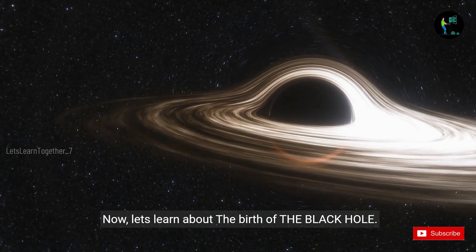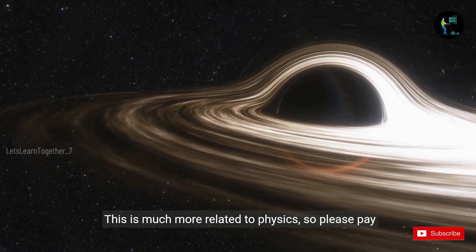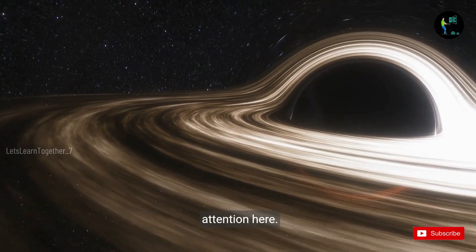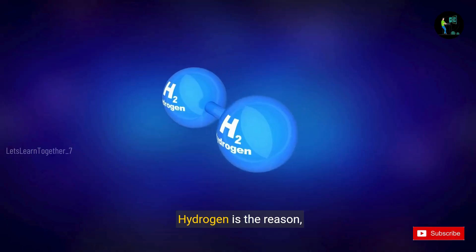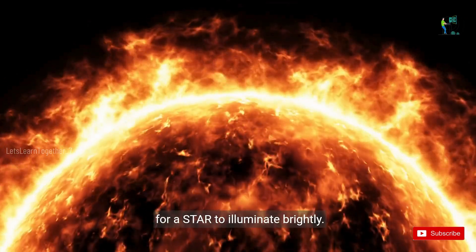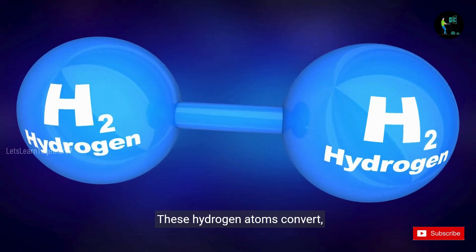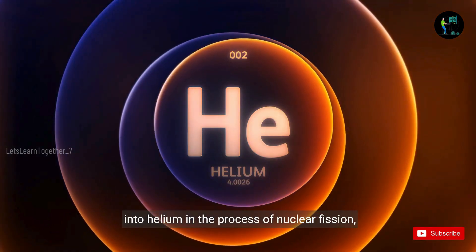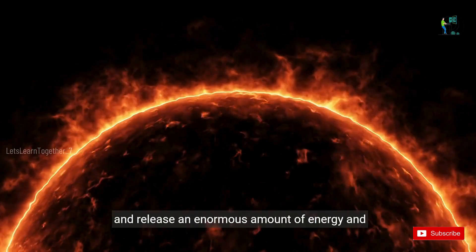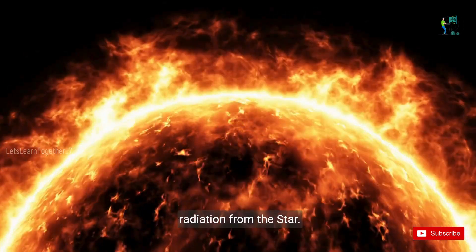Now let's learn about the birth of the black hole. This is much more related to physics, so please pay attention here. Hydrogen is the reason for a star to illuminate brightly. These hydrogen atoms convert into helium in the process of nuclear fusion and release an enormous amount of energy and radiation from the star.